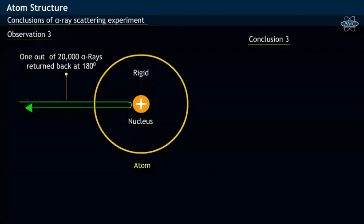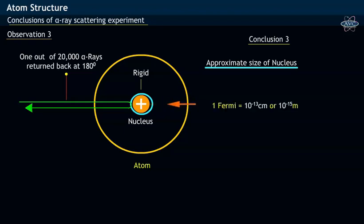Rutherford estimated that the approximate size of nucleus to be of the order of 1 Fermi, which is equivalent to 10 to the power of minus 13 centimeters or 10 to the power of minus 15 meters.